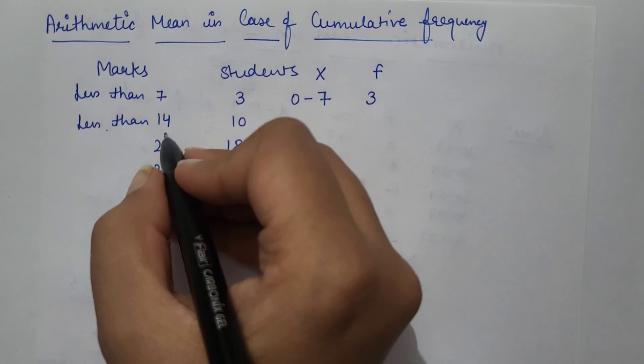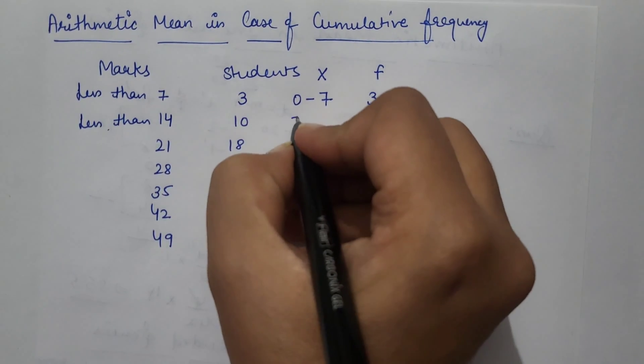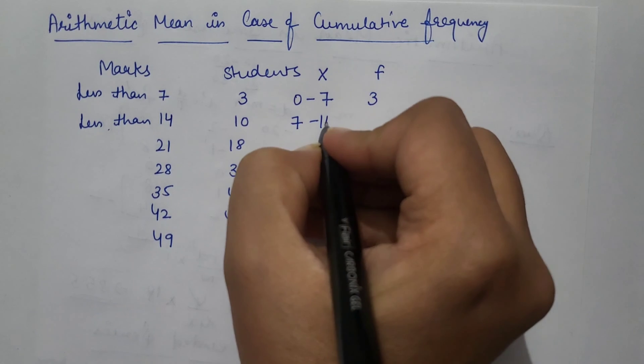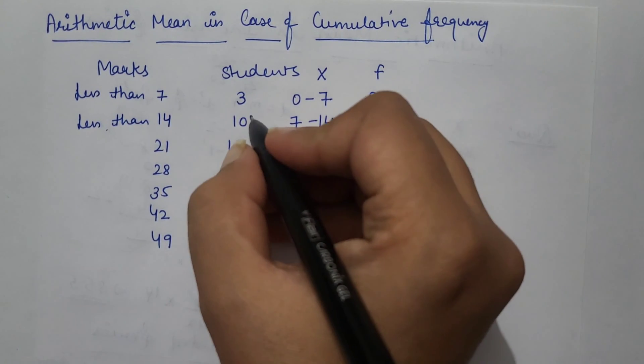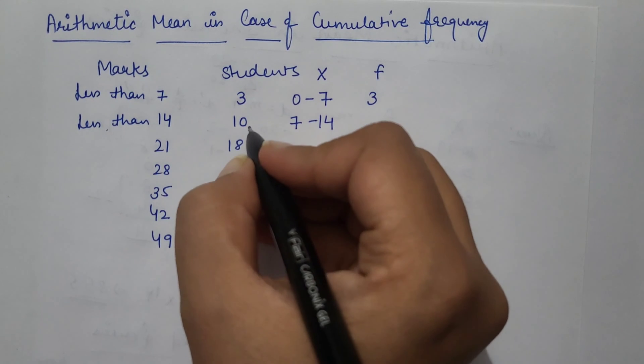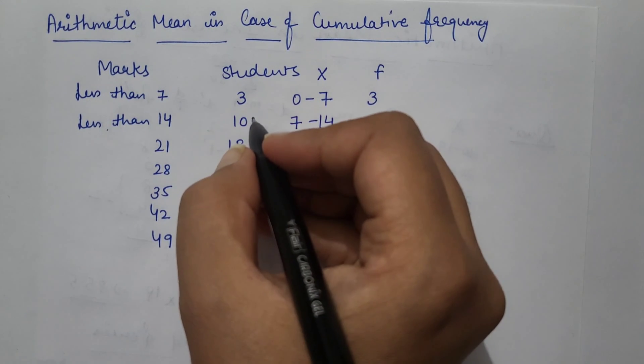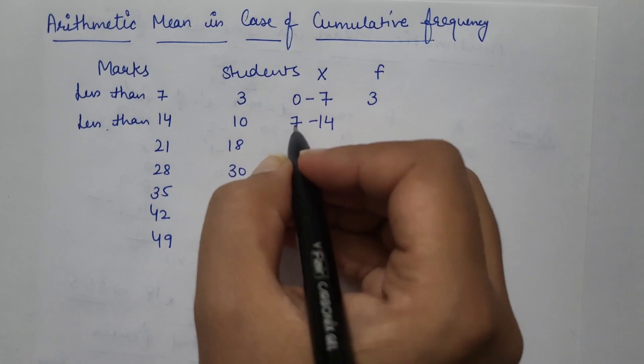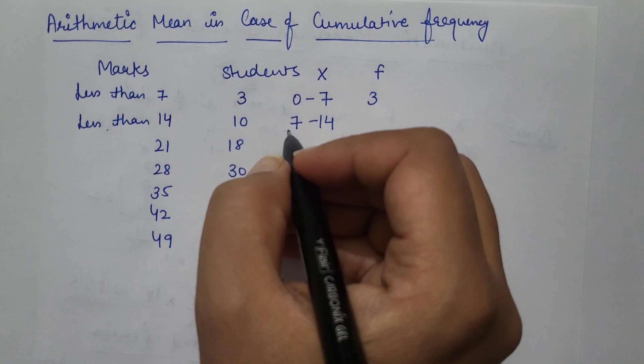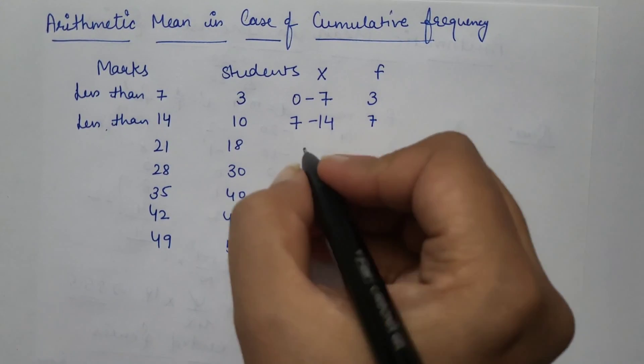So less than 7 means 0 to 7 ke beech mein jinke marks the, aise jo students the, vo 3 the. Less than 14, jinke marks 14 se kam the. So humein to class interval kya karna hai? Break karna hai. We will take it as 7 to 14. And for this conversion, 14 se kam jinke marks the, vo 10 students hain. Aur jinke 7 se kam the, vo 3 hain. To agar main in 3 ko 10 mein se subtract kar doon, to 7 to 14 class interval ki frequency mere pass aajayegi. So it would be 7.